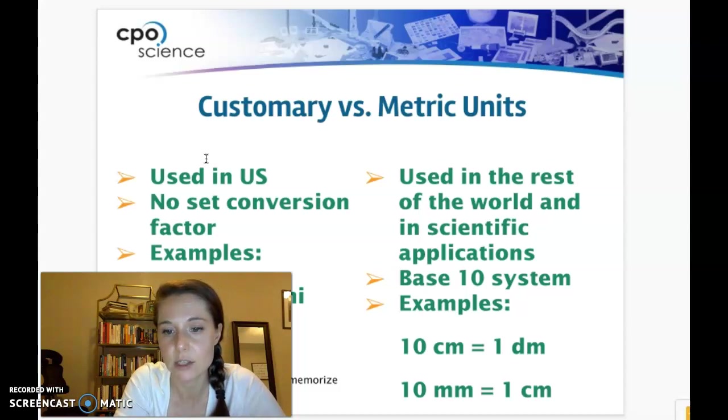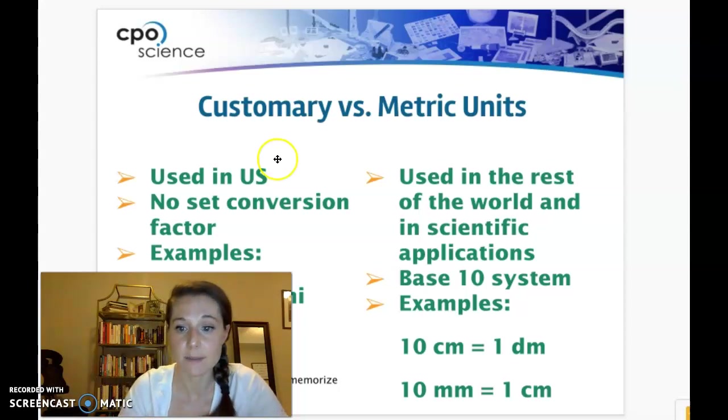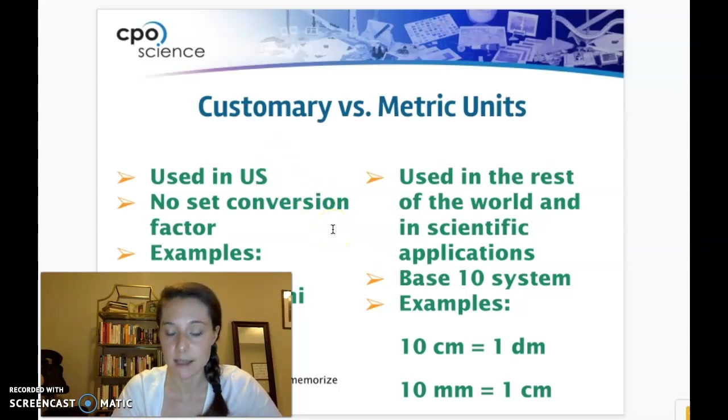So it's fantastic. It's really easy to use and really easy to convert one to the other. So for example, one decimeter is equal to 10 centimeters and one centimeter is equal to 10 millimeters. So again, this makes it really easy to convert one to the other.